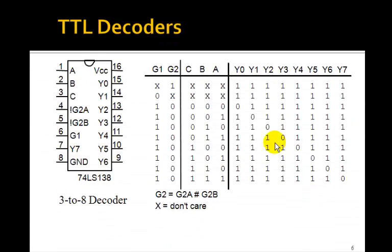Here is another TTL 3 to 8 decoder, the 74138. Here there are two enable signals. G1 has to be 1, G2 has to be 0 to enable it. And then there are three inputs, C, B, and A. And again, this is a case of an active low output.